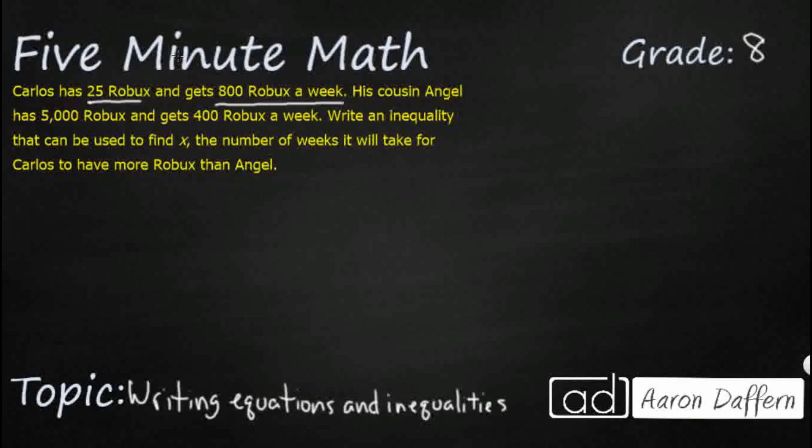Angel has, oh, look at that. His cousin Angel gets 5,000 Robux to start with, but only gets 400 Robux a week. Okay, so that's different. Then we need to write an inequality that can be used to find X, the number of weeks. How long will it take for Carlos to have more Robux than Angel?